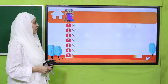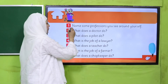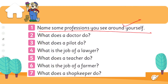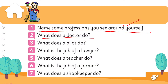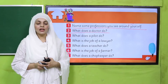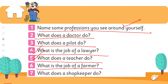For evaluation, quickly answer the following questions orally — written nahi karna. Name some professions you see around yourself. What does the doctor do? He treats sick people. What does a pilot do? He flies an aeroplane. What is the job of a lawyer? He works in the law department. What does a teacher do? He or she teaches people. What is the job of a farmer? He works in the fields. What does a shopkeeper do? He sells different things.